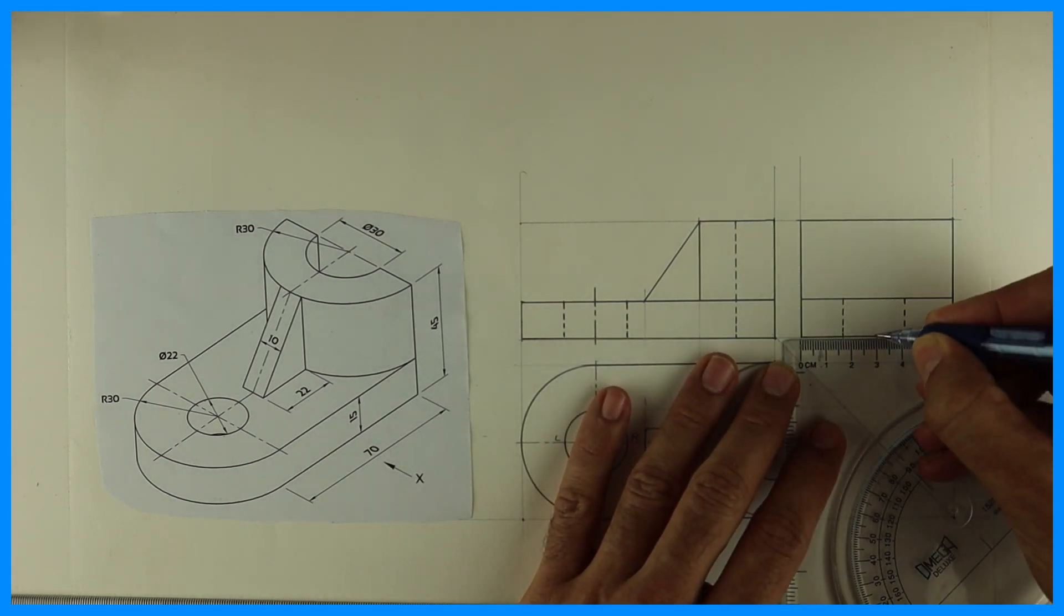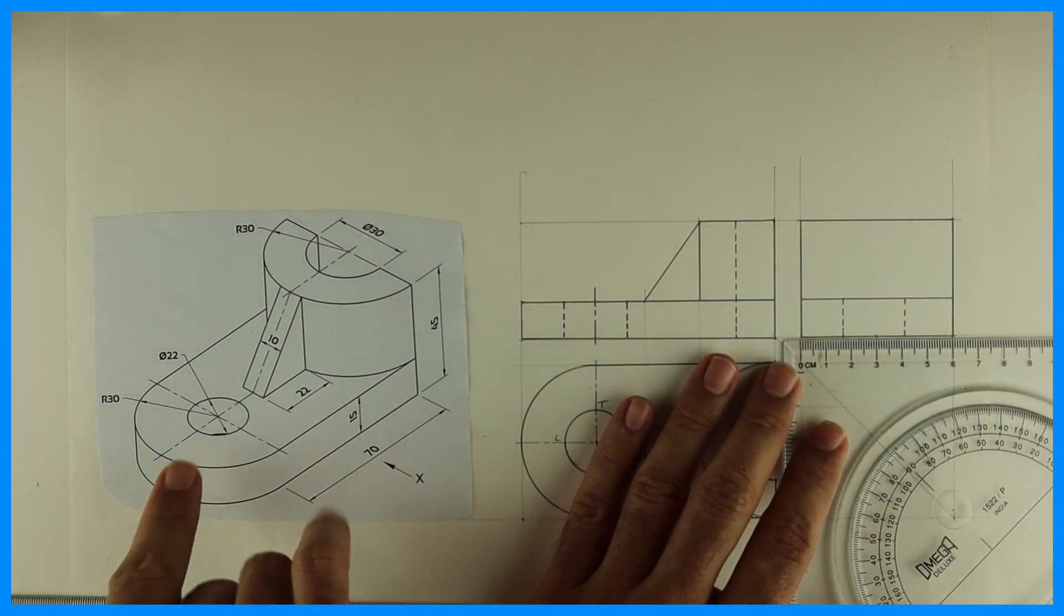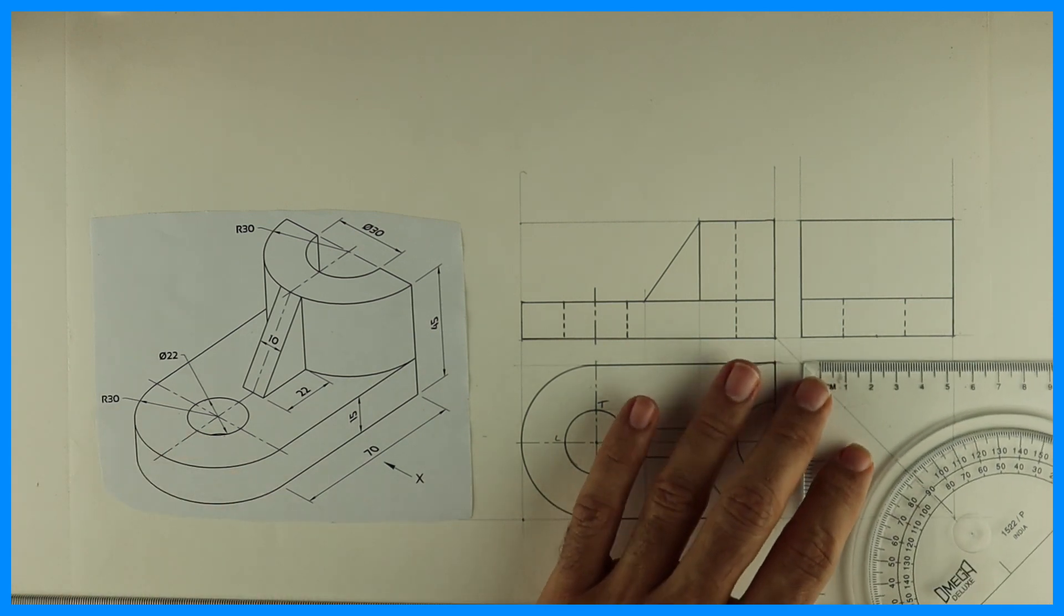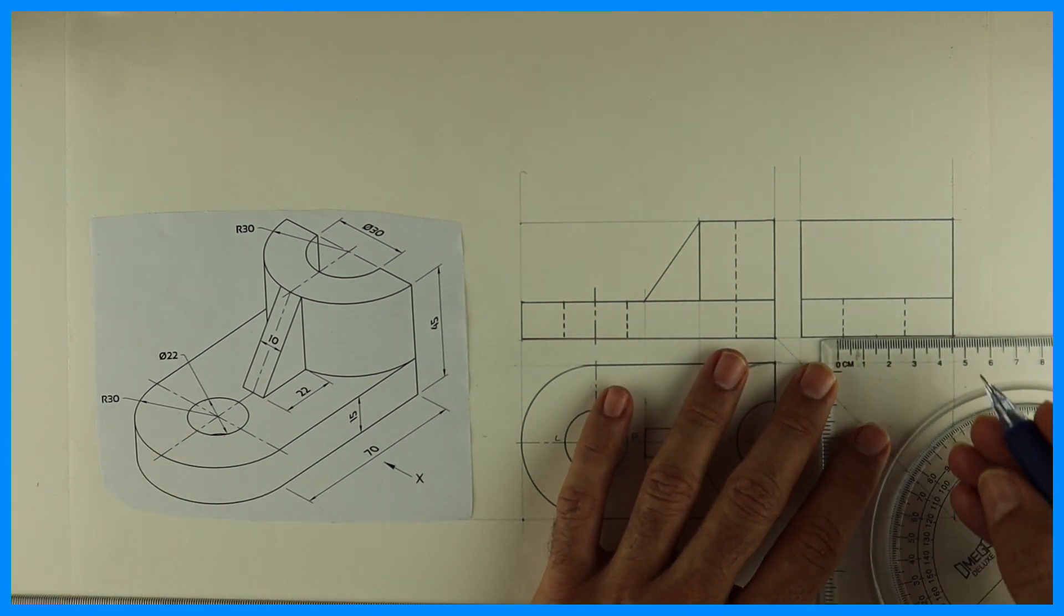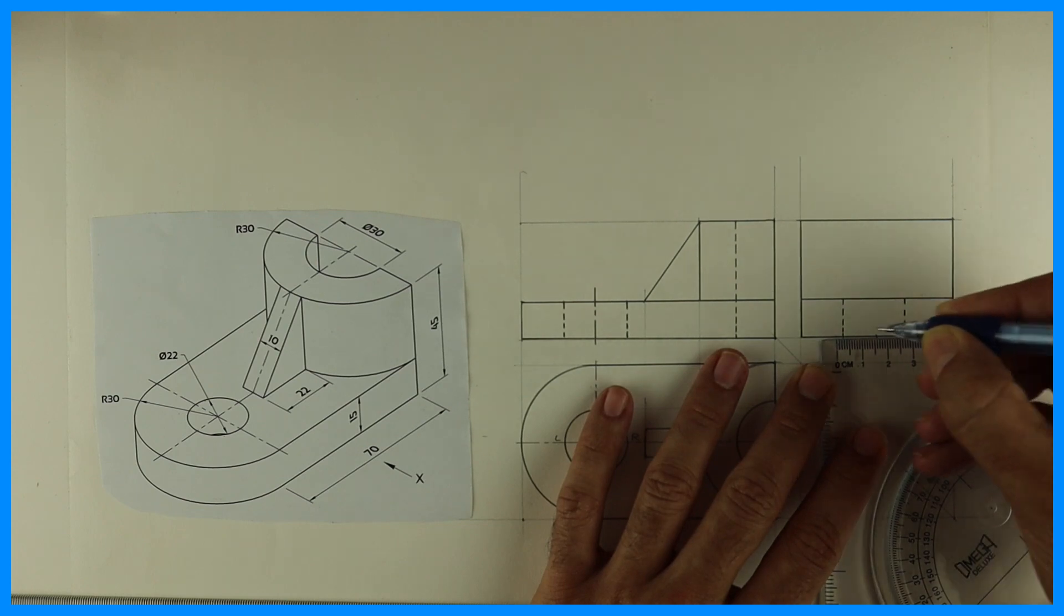So from center, I can mark 15, 15. See that, this one is 11, 11. This is 15, 15.